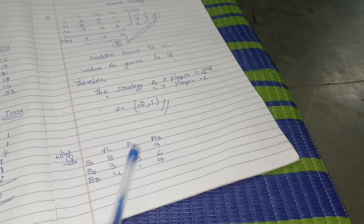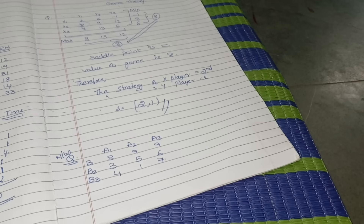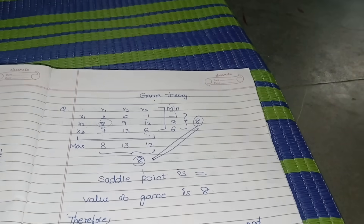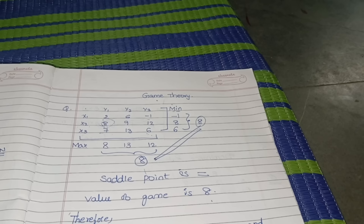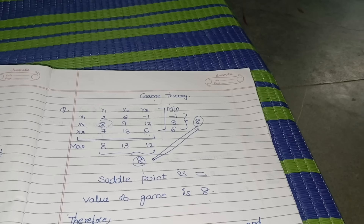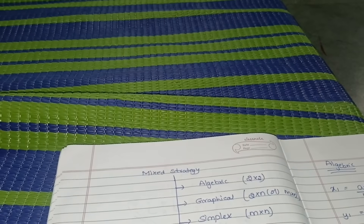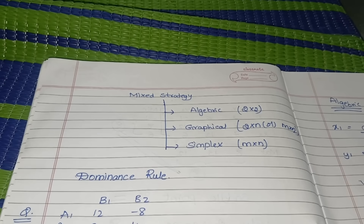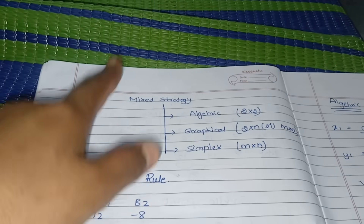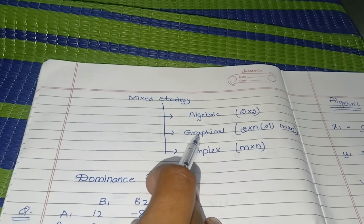There is a homework problem provided - you can do it easily and let me know your answer in the comment section. Now, what if the saddle point is not equal? If saddle point does not exist, we have three methods to solve using mixed strategy: algebraic method, graphical method, and simplex method.